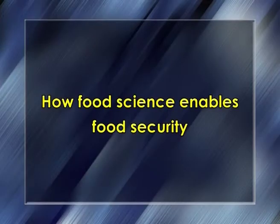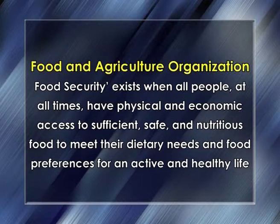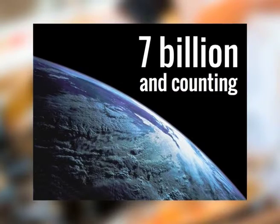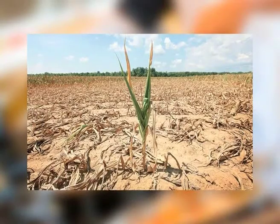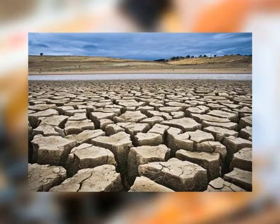Let us now understand how food science enables food security. Food security features as one of the most dynamic and complex challenges humanity has ever faced. According to the Food and Agriculture Organization, food security exists when all people at all times have physical and economic access to sufficient, safe and nutritious food to meet their dietary needs and food preferences for an active and healthy life. The world population is growing continuously, and a single event such as poor harvest in a vast region, drought or famine would be enough to disrupt the world food supply.